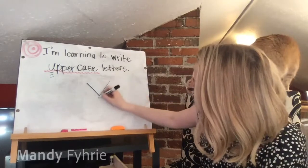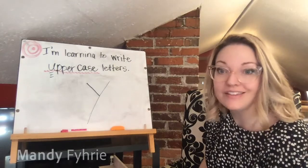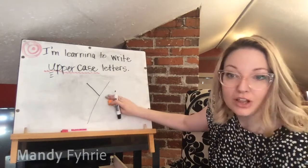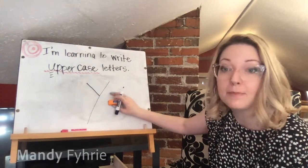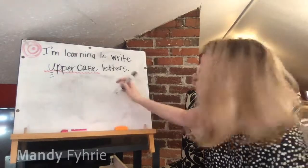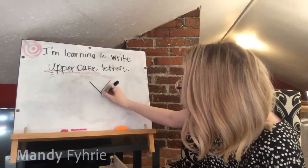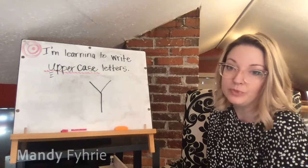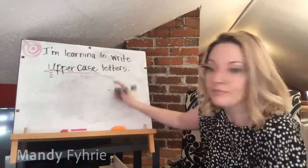Capital Y: one way is little line down, hop to the top, one big line backwards. Another way — the way I learned — is slide down, hop to the top, slide down, then one line straight down. Both are capital Y as long as you write it big enough. Use whichever works best for you.